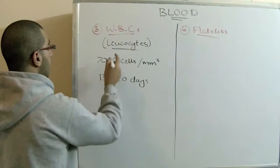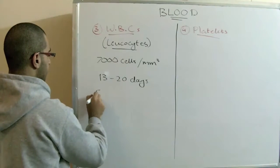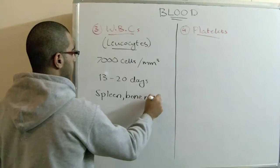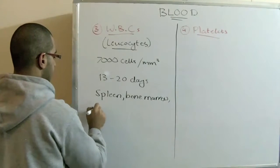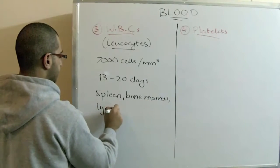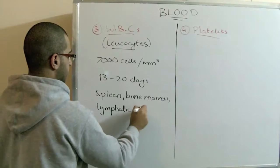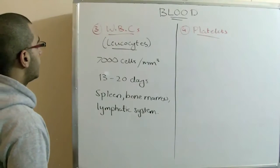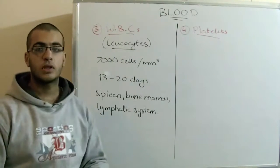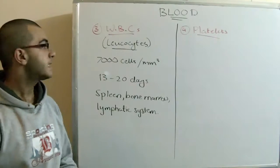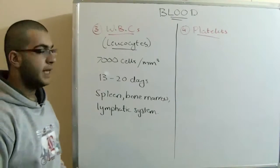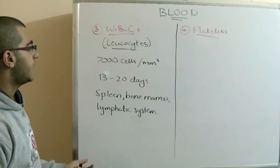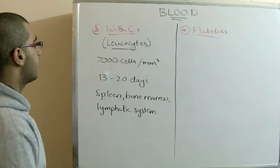The white blood cells are produced from the bone marrow and the lymphatic system. From their functions, of course, is the production of antibodies to give the body its immune function. They kill the microbes and also they engulf the foreign bodies to protect the body.